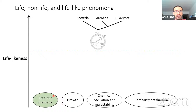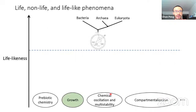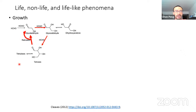We know that abiotic chemistry produces biomolecules such as amino acids, monosaccharides, and nucleotides without living systems. Famous examples, as Jim mentioned, are the Urey-Miller experiment, the formose reaction, and synthesis of purines from hydrogen cyanide. We also know that chemical systems can present growth dynamics. In the formose reaction, a glycoaldehyde molecule reacts with formaldehyde to produce a three-carbon sugar, which further reacts with formaldehyde to form a four-carbon sugar, which finally dissociates into two molecules of glycoaldehyde. So after one cycle, the glycoaldehyde gets doubled.